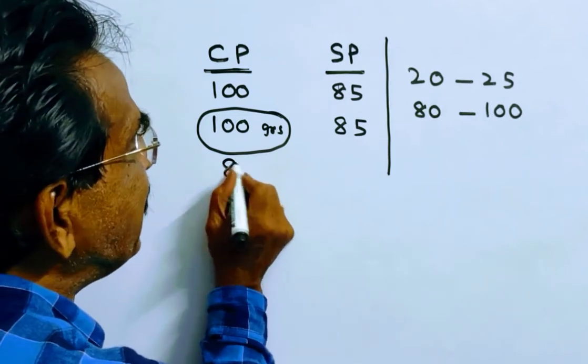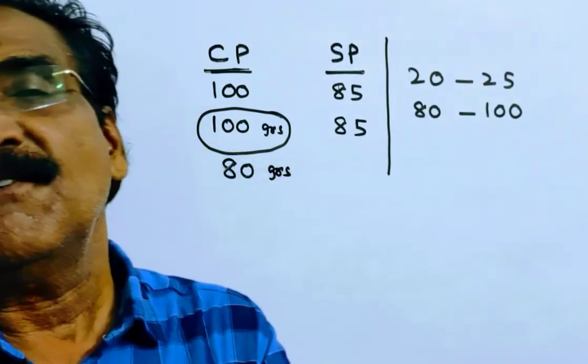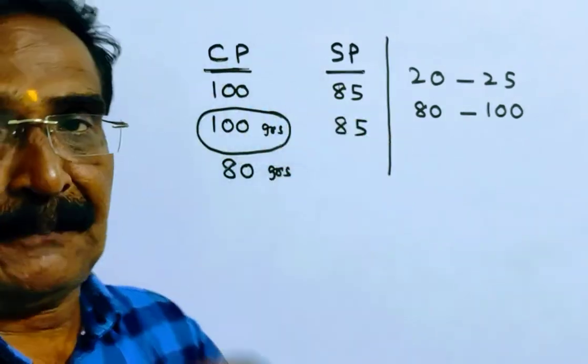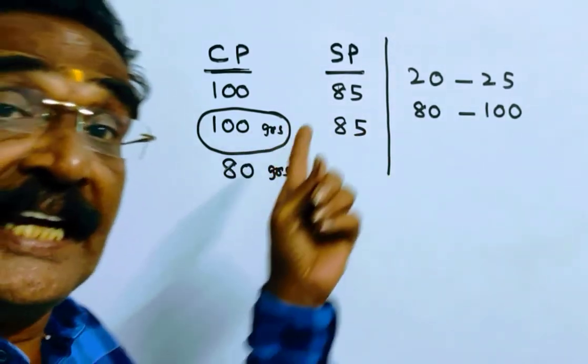He is giving only 80 grams by using a false weight, but taking money 85 rupees. That is money for 85 grams.